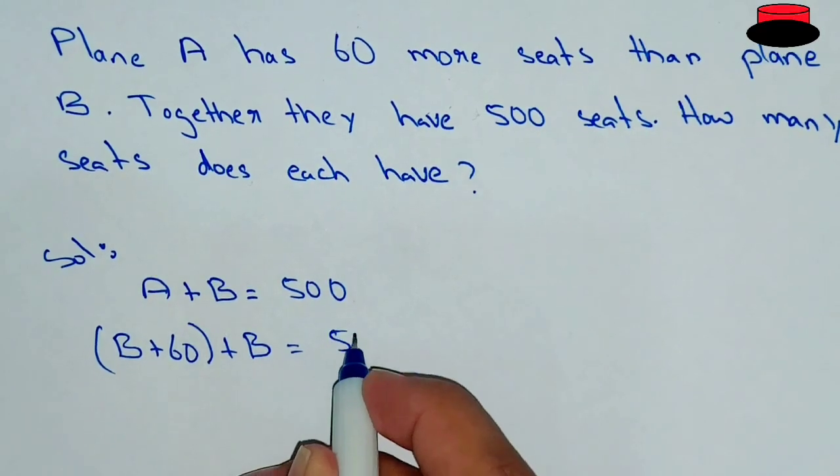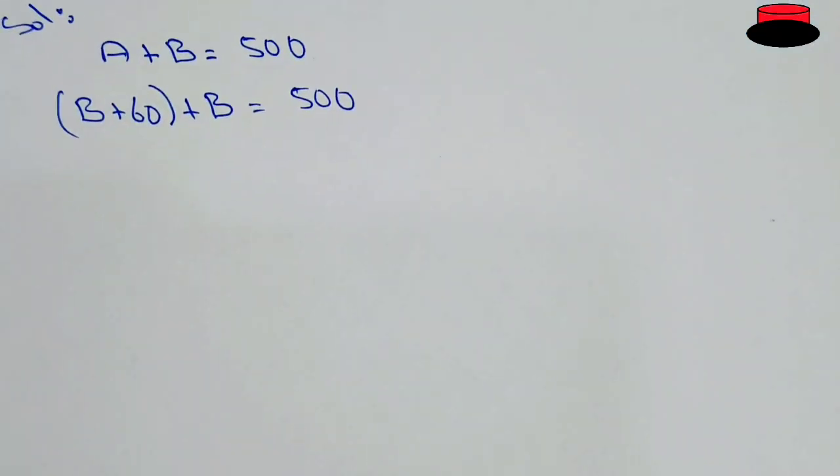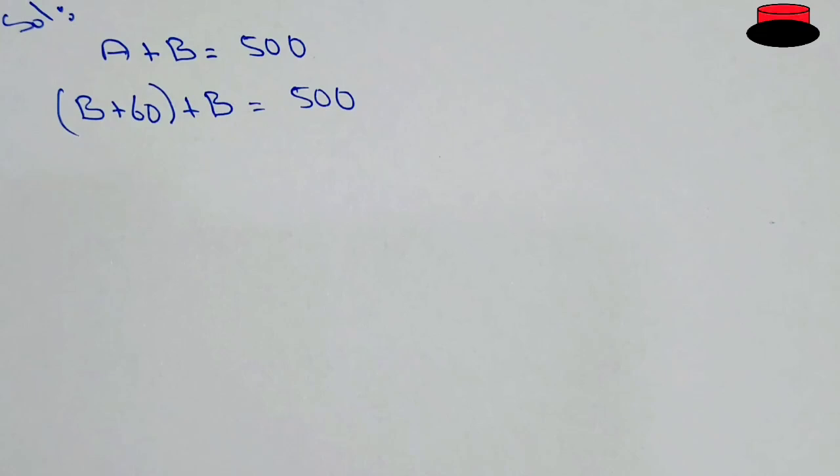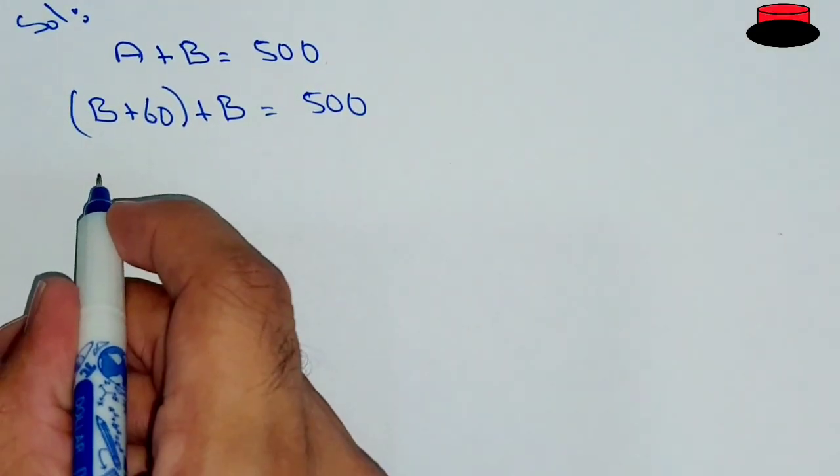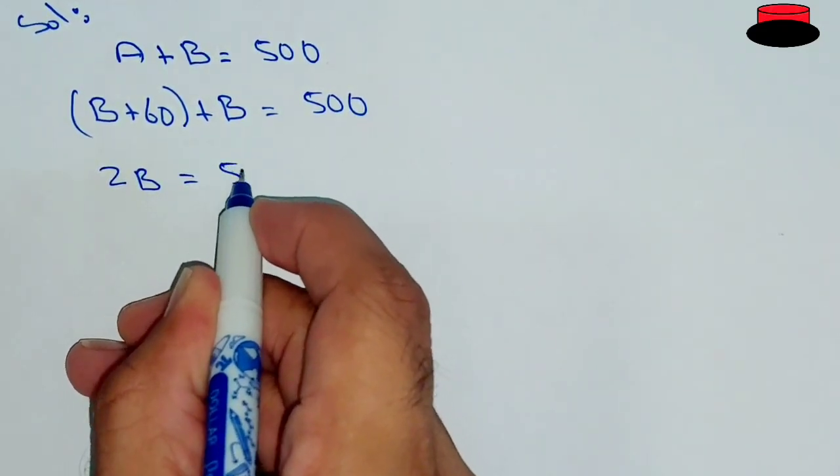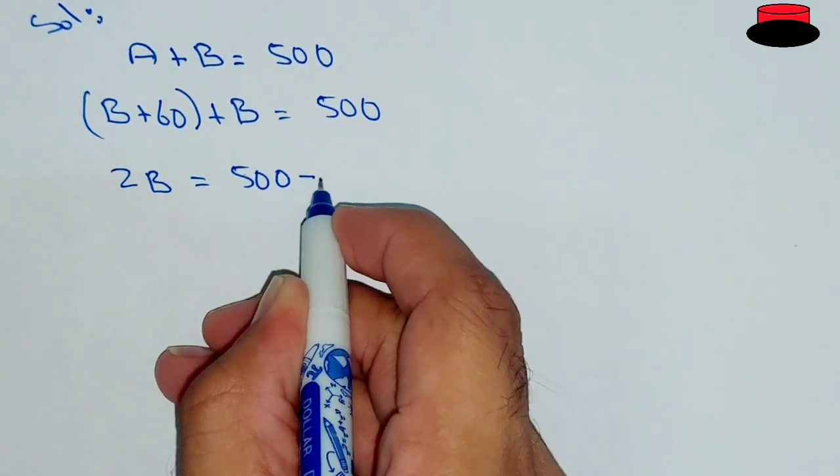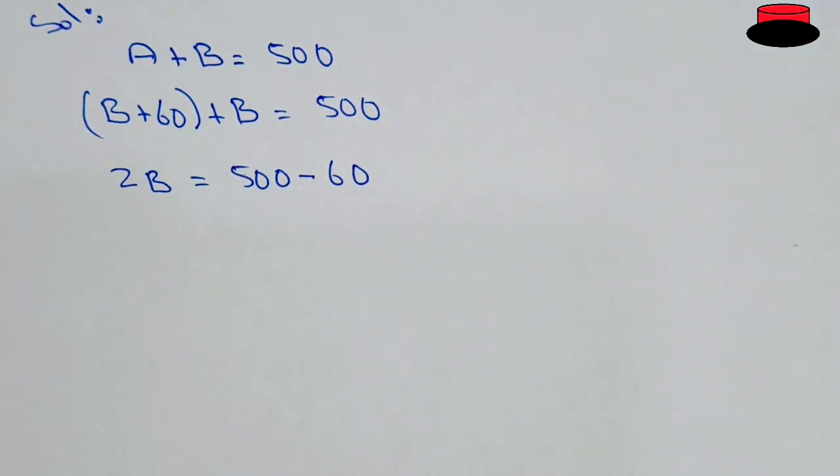more seats than Plane B. So B plus 60 plus B equal to 500. Now we know that B plus B will be 2B. So 2B equal to 500 minus 60, because plus 60 will come on the right hand